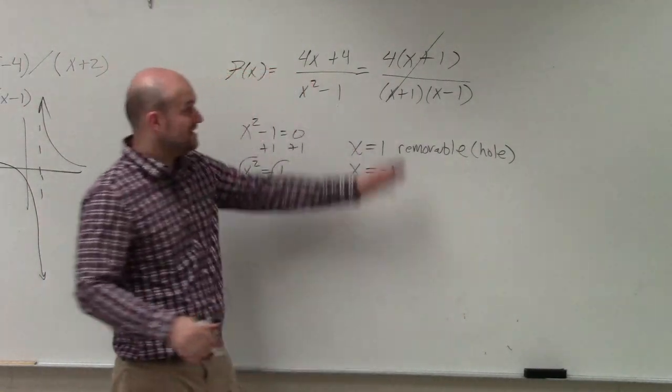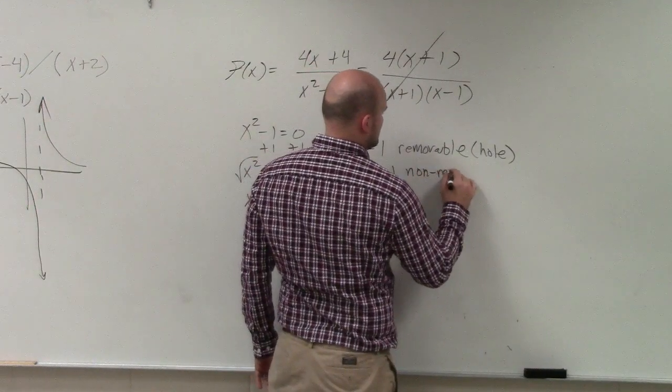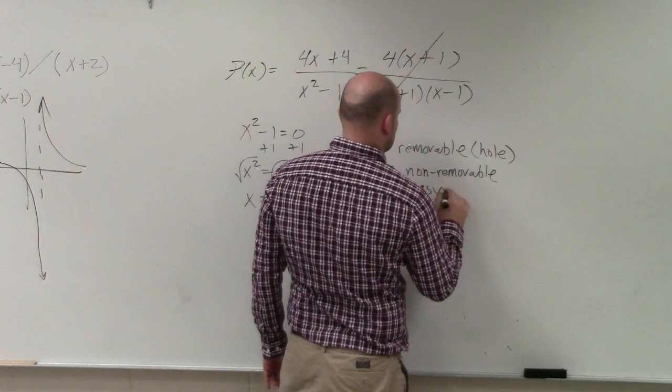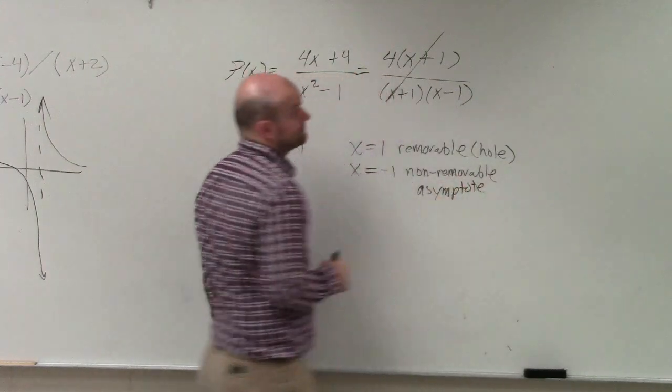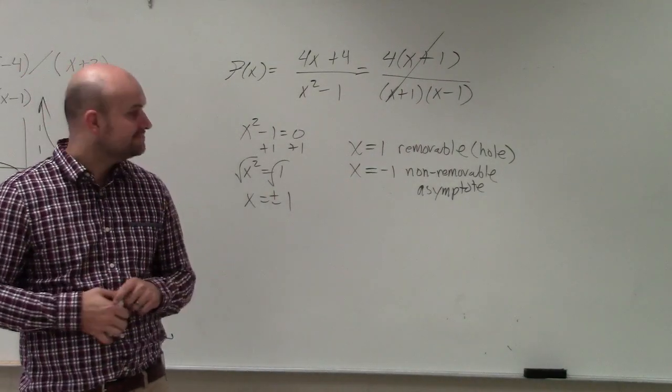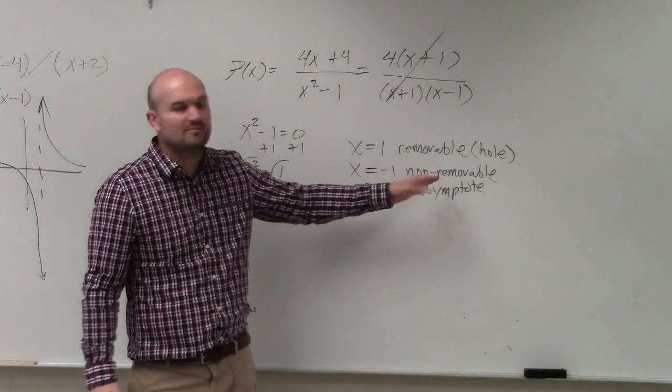Negative 1, you can't divide out. So that is non-removable, and that's an asymptote. And if you look at the graph, what you'll notice is there's only going to be one asymptote there.